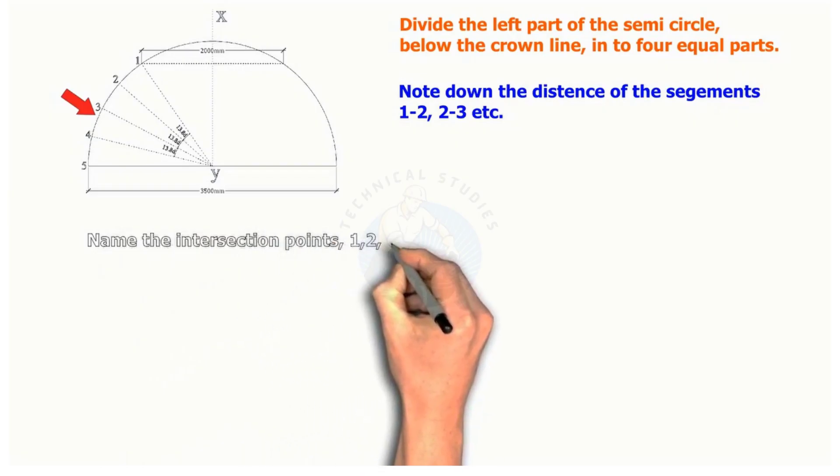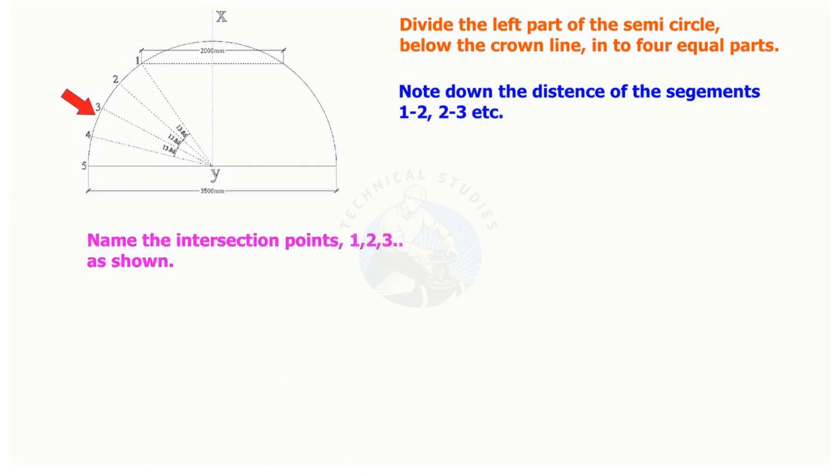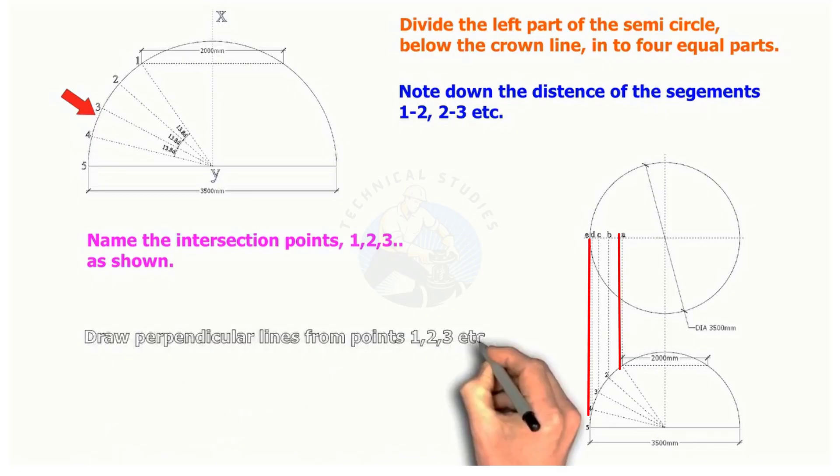Name the intersection points 1 to 5 as shown. Draw perpendicular lines from points 1 to 5, intersecting the center lines of the top circle.